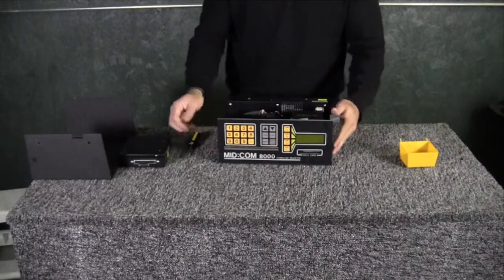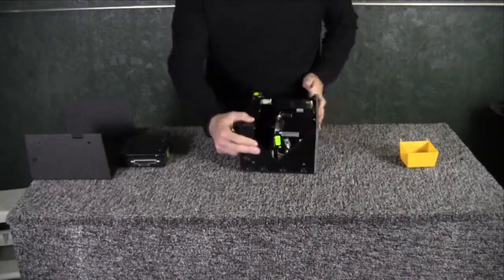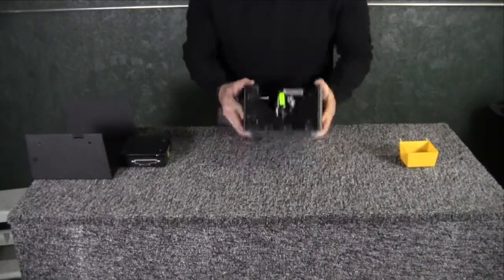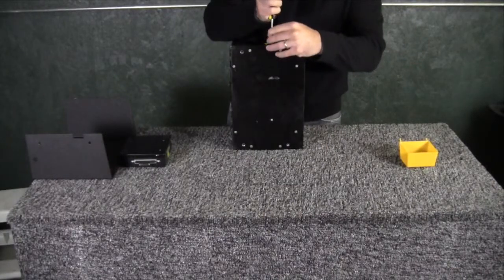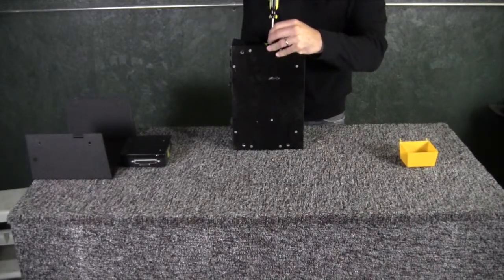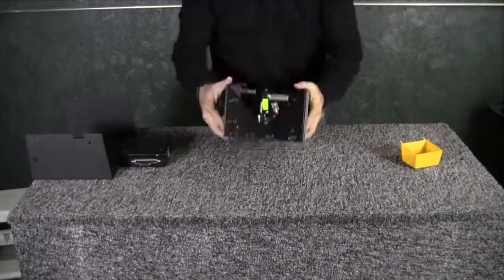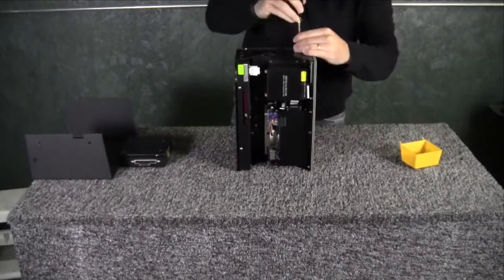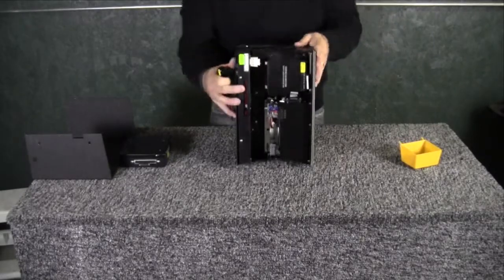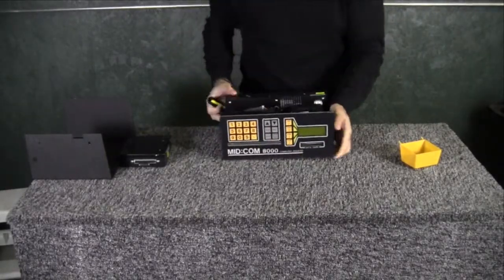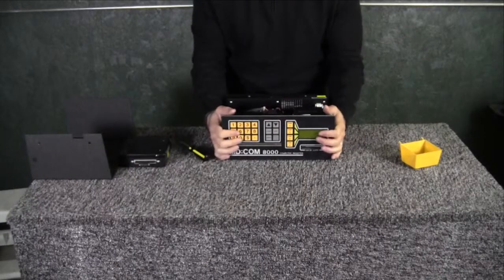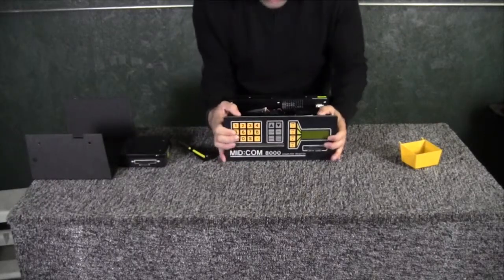First thing we're gonna do is take off the front panel, which is just two screws on both sides. Pull this cover off, just lift out this way. There's a little connector right here, just kind of wiggle, it pops off. And see, that's what was holding it together.